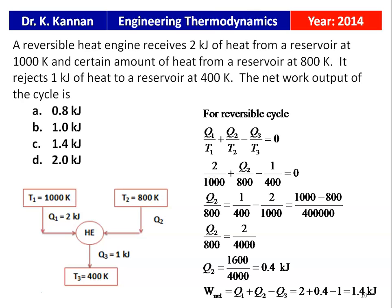For a reversible cycle, using the absolute temperature scale: Q1/T1 + Q2/T2 − Q3/T3 = 0. Substituting: 2/1000 + Q2/800 − 1/400 = 0. Rearranging: Q2/800 = 1/400 − 2/1000 = 2/4000, so Q2 = 16000/4000 = 0.4 kJ. Net work = Q1 + Q2 − Q3 = 2 + 0.4 − 1 = 1.4 kJ. The correct option is C: 1.4 kJ.